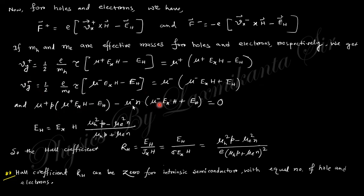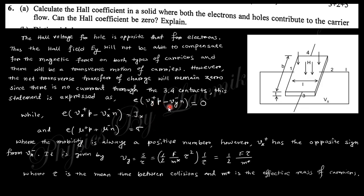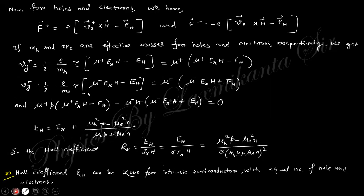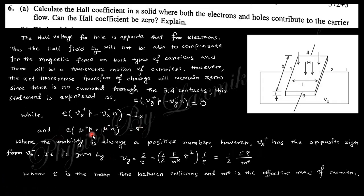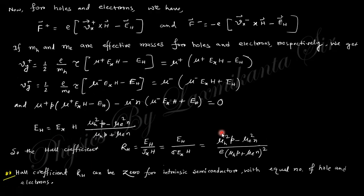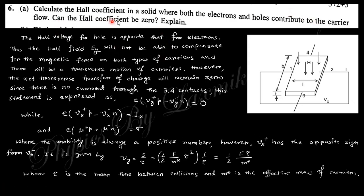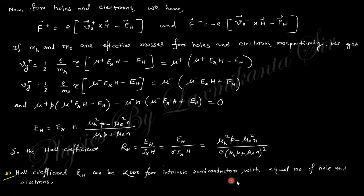The total must be zero because they contribute equally to zero here. This total is zero: vi plus and vi minus is put here. Finally, you will obtain this expression of Eh. The Hall coefficient is nothing but Eh by jx h, where jh is sigma times Ex. So Eh by Ex h is nothing but this one, and sigma equals this. If you put this value, you will obtain the expression of Hall coefficient. The next question asks: can the Hall coefficient be zero? Yes, the Hall coefficient can be zero when the number of holes and number of electrons are equal.